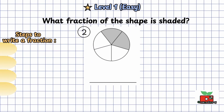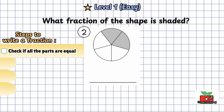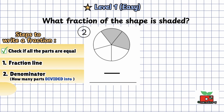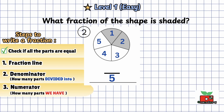Question 2: what fraction of the shape is shaded? Let's follow the steps to write a fraction. Check if all the parts are equal. In this shape, the five parts are equal. Step 1: draw our fraction line. Step 2: write the denominator, the bottom number. The shape is divided into 1, 2, 3, 4, 5 — 5 equal parts — so we write 5 at the bottom. Step 3: write the numerator, the top number. Two parts are shaded, so we write 2 on top. So the fraction is 2 over 5, or two-fifths of the shape is shaded.